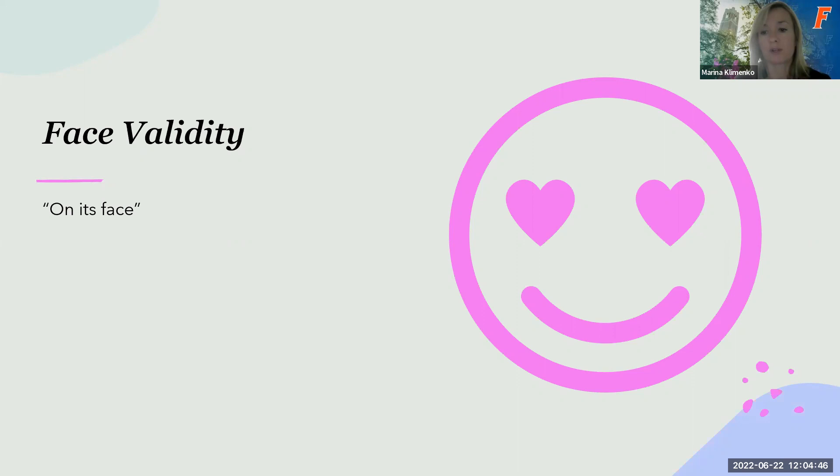Face validity refers to validity on its face value. In other words, it's whether the scale on its face appears to measure the construct. For example, if you want to measure how often someone spends time playing video games and you're asking respondents to rate the frequency of video game playing on a scale of 0 to 7, is this a good way on its face value to represent frequency of playing video games? Reasonably, generally speaking, that should be a reasonable measure.